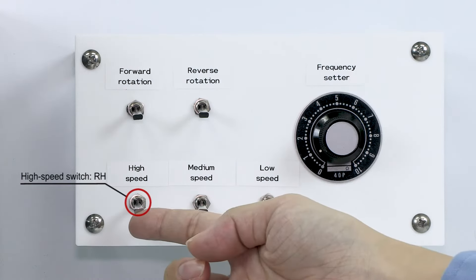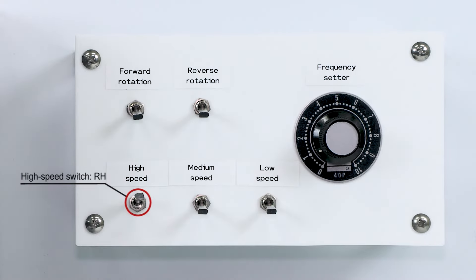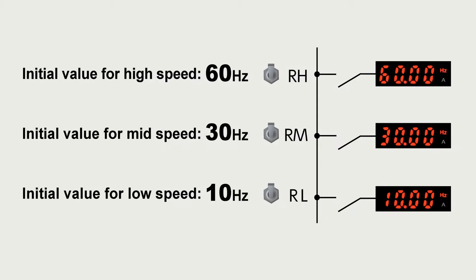Turn the RH switch on for high-speed operation. The initial value for the high-speed RH terminal is 60 Hz, 30 Hz for the mid-speed RM terminal, and 10 Hz for the low-speed RL terminal.